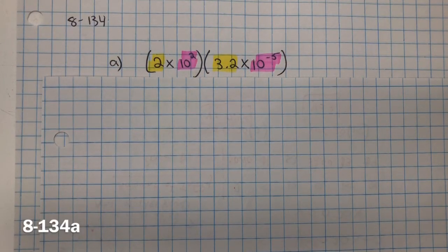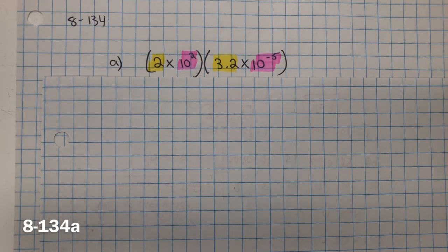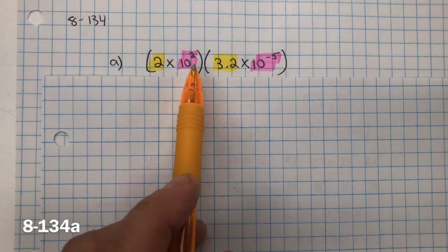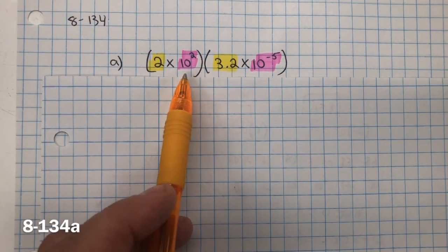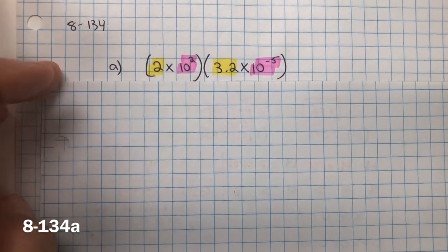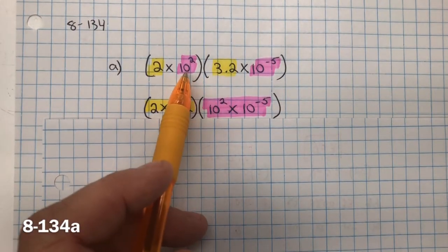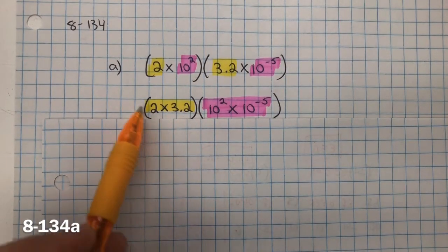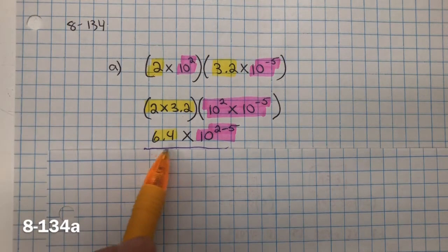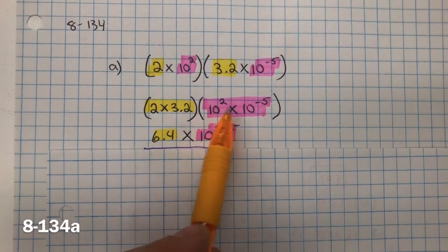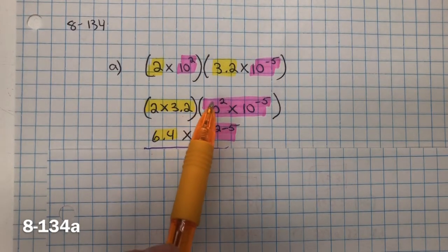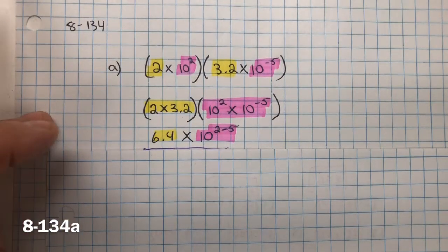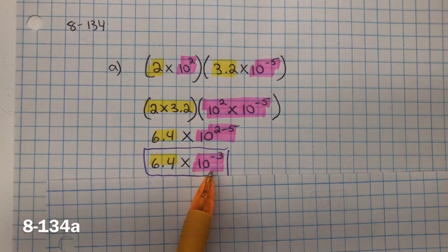For problem 134, we need to compute each product or quotient and convert the final answer to scientific notation. When you're multiplying in scientific notation, you do not have to have the powers of 10 have the same exponents. That's only when you're adding or subtracting. So we're going to multiply the coefficients, 2 multiplied by 3.2, and then now the powers, 10 squared multiplied by 10 to the negative 5th. Now we multiply this, 2 multiplied by 3.2 is 6.4, and when you're multiplying integer exponents with the same base, you keep the base and you add the two exponents. So this is 2 plus a negative 5, or 2 minus 5. 2 minus 5 is negative 3.